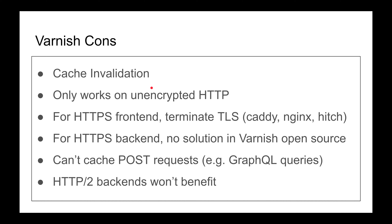Another disadvantage: Varnish open source only works with unencrypted HTTP — at least as of November 2019. It has to, because it needs to read the data to cache it. If you have a secure website, at some point you must decrypt the traffic, send it as plain text to Varnish so it can cache it. For HTTPS frontend, you terminate TLS using Caddy, Nginx, or Hitch. Open source Varnish does not support HTTPS backend connections — that's only in Varnish Plus.